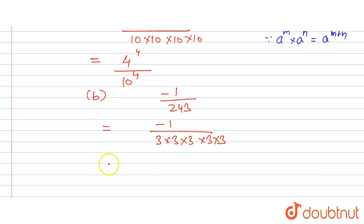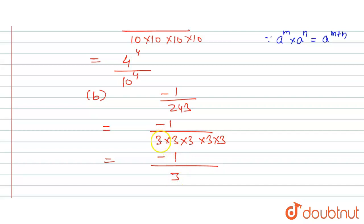The base is the same and the power will be added — that is 3 multiplied five times. So the answer is minus 1 upon 3 raised to 5. This is the answer for part B.